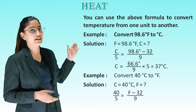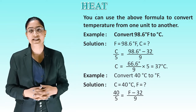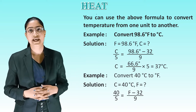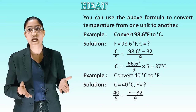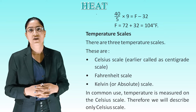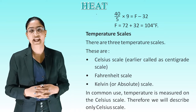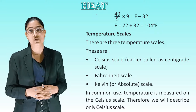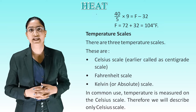Another example: Convert 40 degree Celsius to degree Fahrenheit. Solution: C = 40°C. Using 40/5 = (F − 32)/9, we get (40/5) × 9 = F − 32. So F = 72 + 32, which gives 104 degree Fahrenheit.